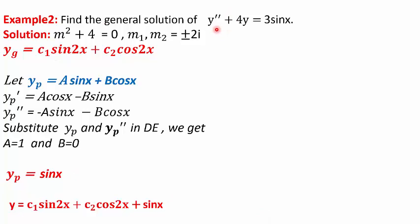In example 2, we are given y'' + 4y = 3 sin x. Take the right-hand side to be 0. The auxiliary equation is m² + 4 = 0, giving roots ±2i. As these are complex roots, the general solution yg = c₁ sin(2x) + c₂ cos(2x). Since the right-hand side has sin x, with b = 1, we take yp = A sin x + B cos x. Differentiating twice, substituting, and comparing coefficients, we get A = 1 and B = 0, so yp = sin x. The final solution is y = c₁ sin 2x + c₂ cos 2x + sin x.